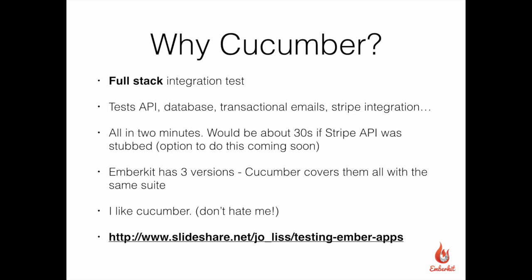The Cucumber tests actually test the live Stripe integration — well, the test API — but it actually talks to Stripe. I thought if I'm selling a product that lets you bill customers, I really want to be sure that it's working. The tests run in about two minutes, and they would run in about 30 seconds if the Stripe test API wasn't so slow. I'm working on stubbing that, which is easy on the server side, but it's harder to stub out client-side calls to the Stripe checkout library — but I think I've got a way to do that, so that's coming soon.